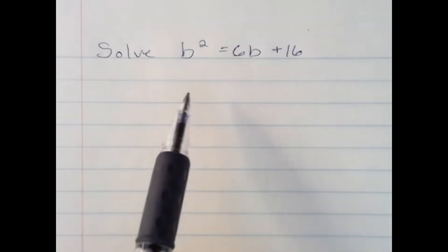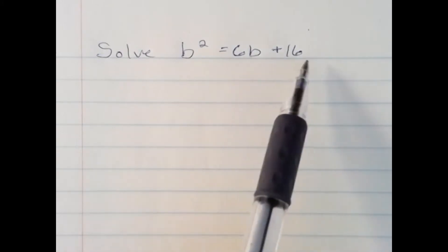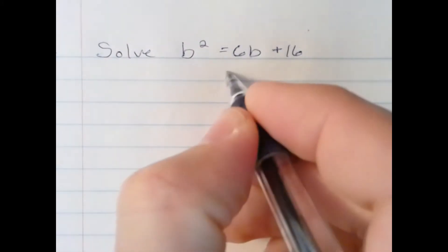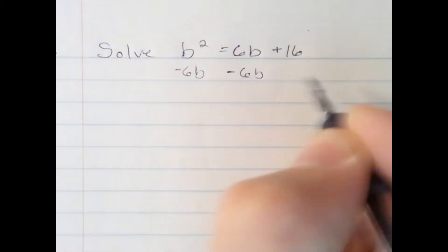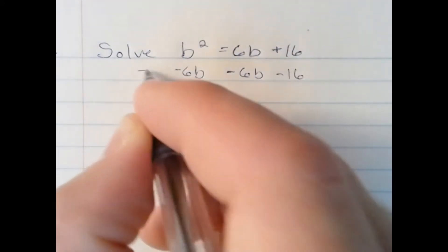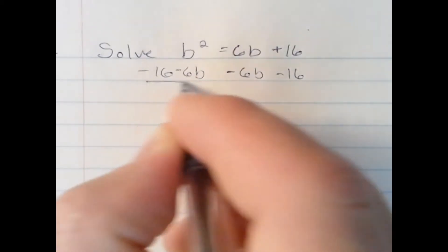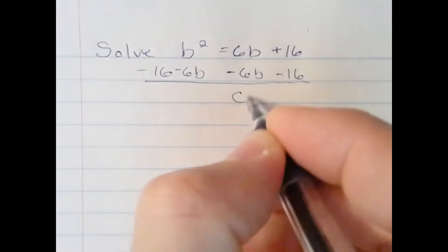And the goal first is to get everything to one side. I have b squared here on the left, 6b, and 16 on the right. I'm going to take away 6b from both sides. I'm also going to take away 16 from both sides, leaving us with 0 over here.